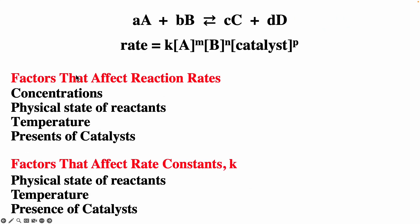Four things affect the reaction rate: concentration, physical state of reactants, temperature, and presence of a catalyst. Three things affect the rate constant: physical state of reactants, temperature, and presence of the catalyst. Concentrations appear explicitly in the rate equation, so they do not directly affect the rate constant.